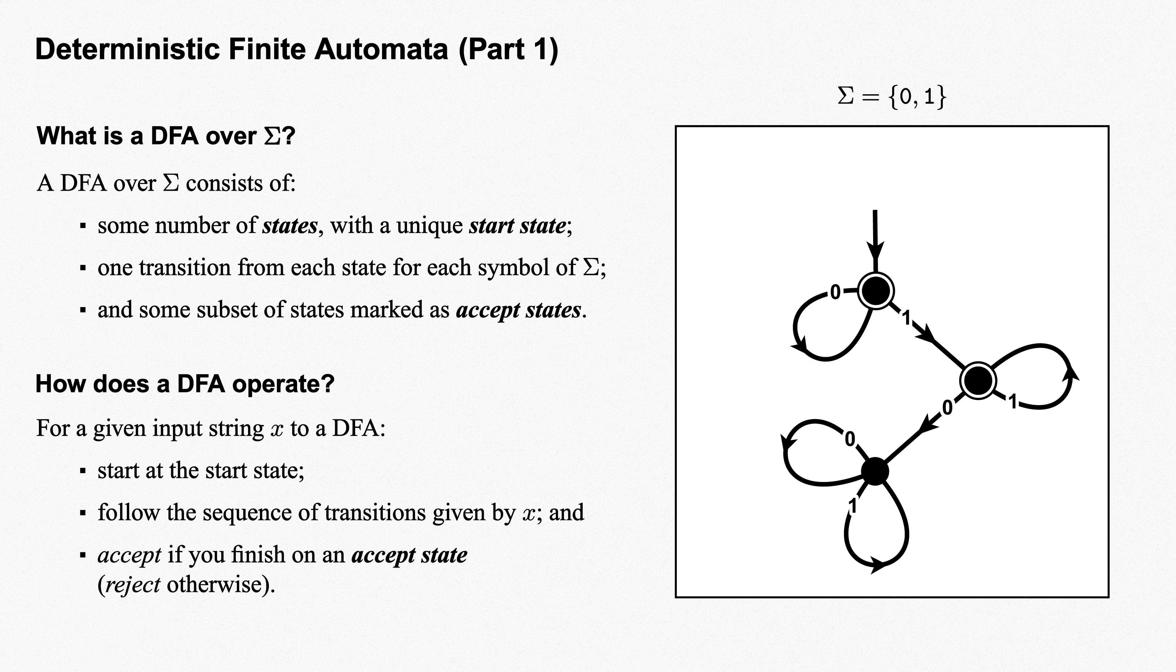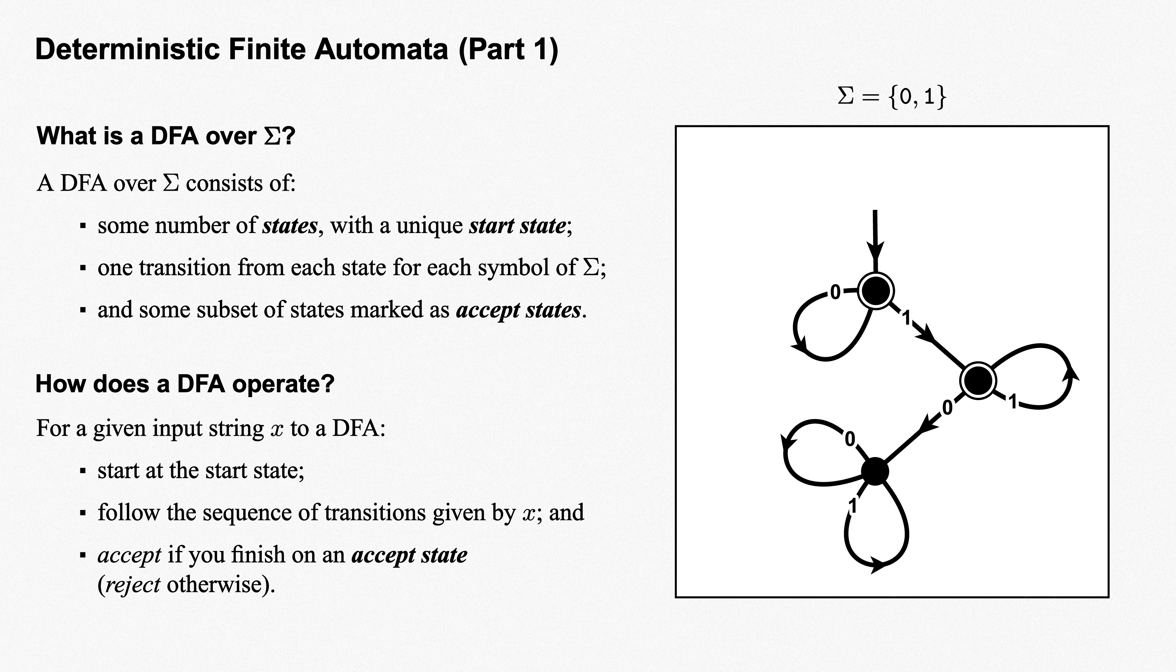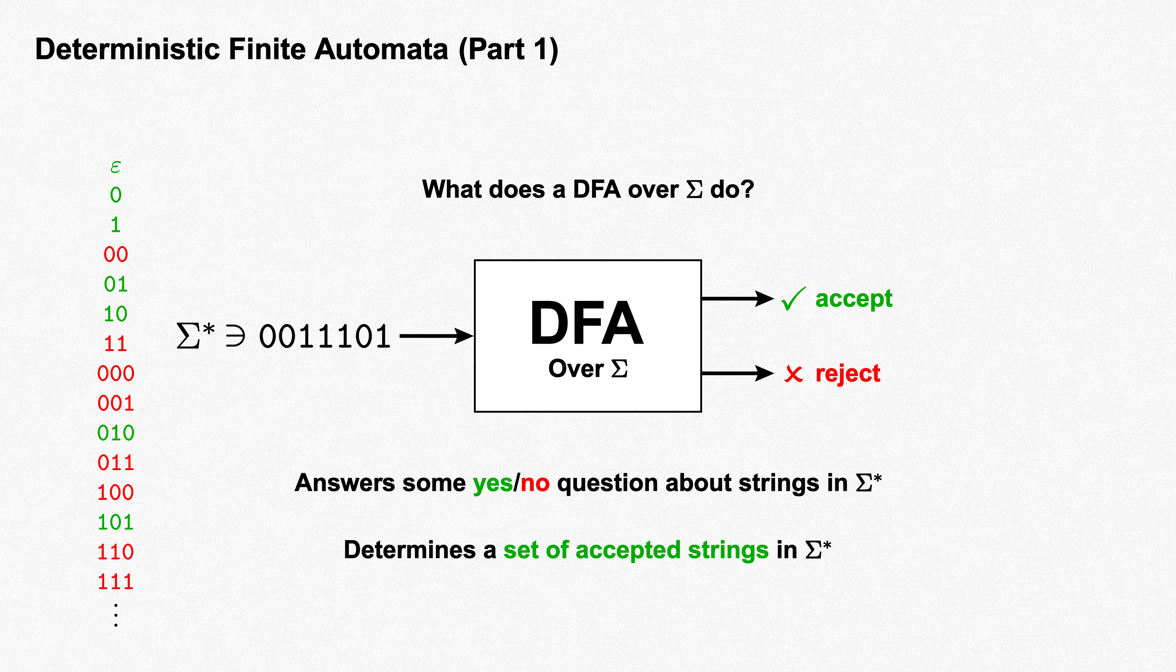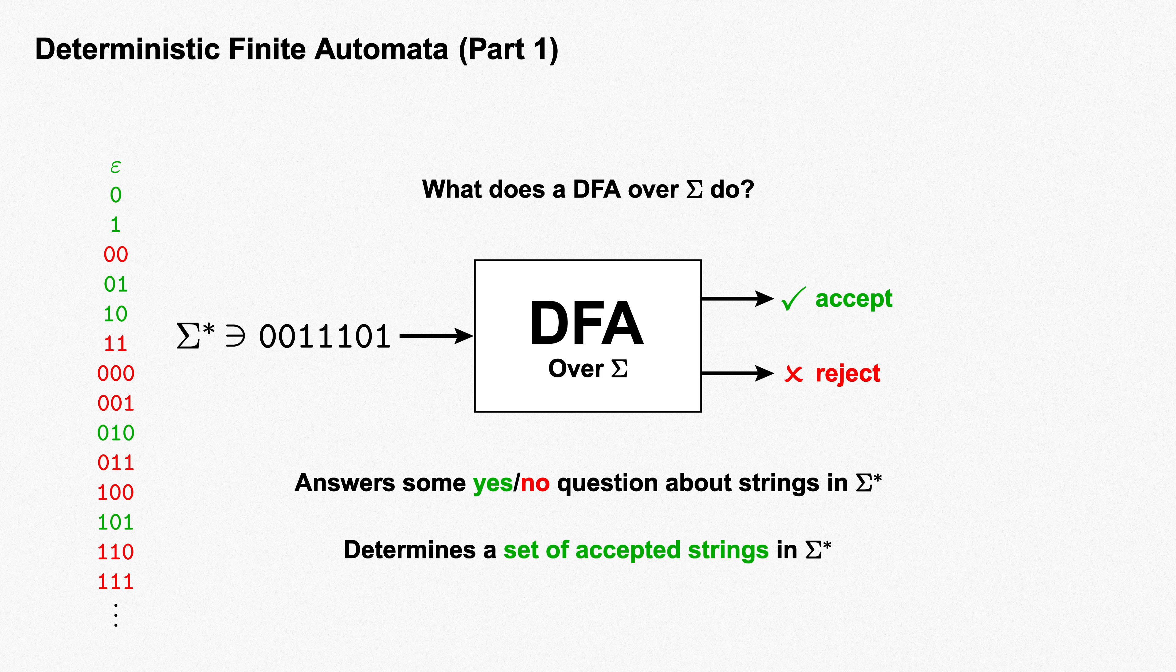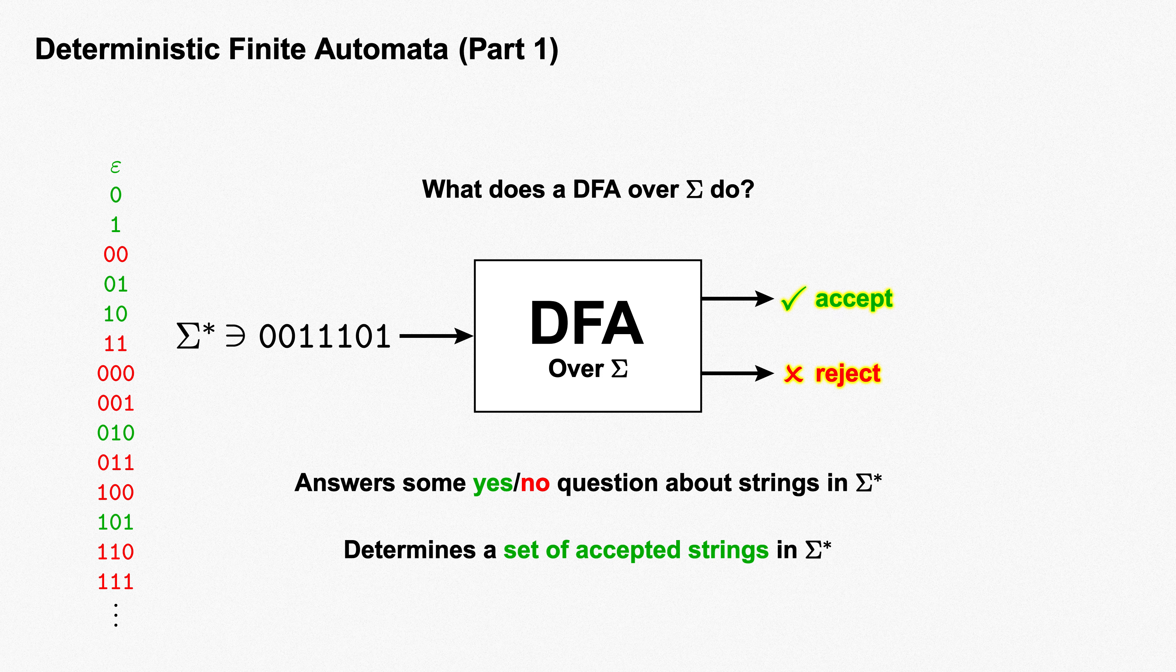Those are all the basics about DFAs. We've seen how they're constructed and how they operate. We'll have a great deal more to say about DFAs, so keep in mind for the future the big picture of what a DFA over sigma does. It acts as a function that maps each input string in sigma star to either accept or reject, which we can think of as green or red, or yes or no.